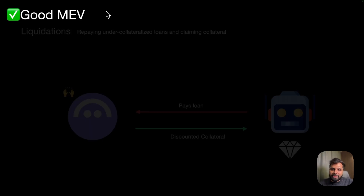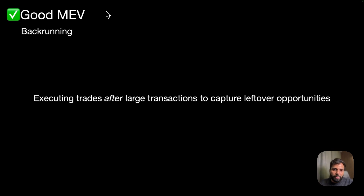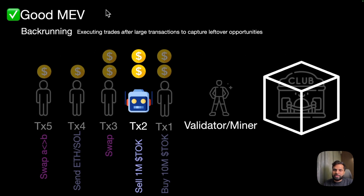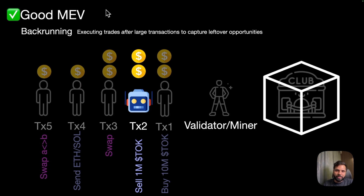Another example is back-running, where trades are executed after large transactions to capture leftover opportunities. For example, there can be a bot which keeps listening for certain types of transactions, and as soon as that transaction happens, it will send its own transaction to gain profit. The bot is listening for TOK token transactions, and as soon as the user buys 10 million TOK tokens — increasing the price — the bot detects that and instantly sends a sell transaction for TOK tokens it was holding, gaining profit and not harming the user because it's selling after the user has already bought, hence not affecting the user's trade. So it can be a good type of MEV.